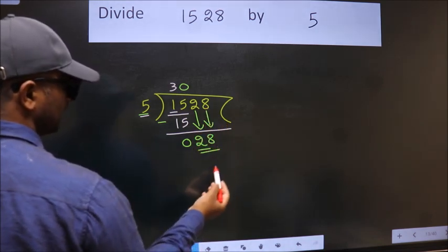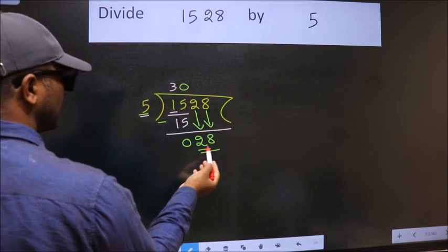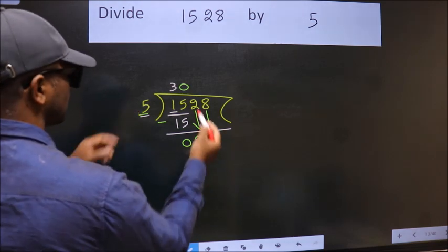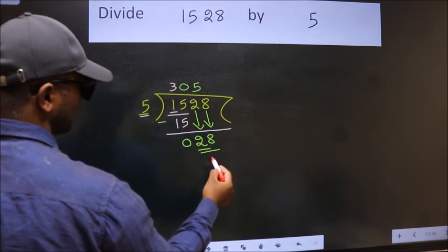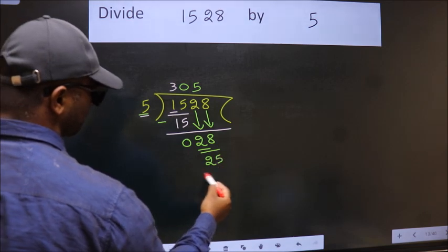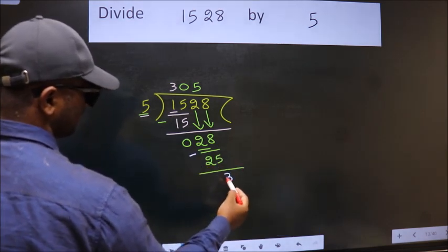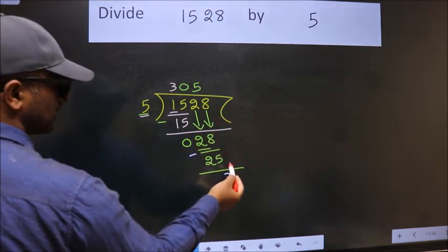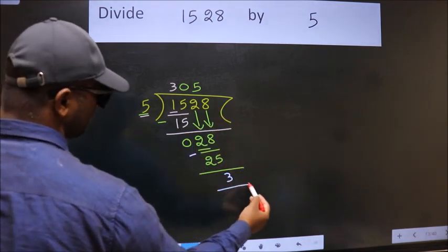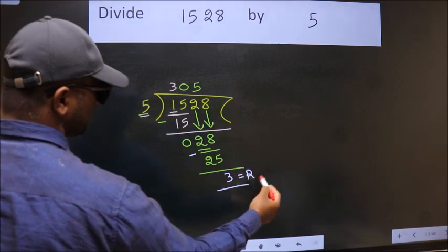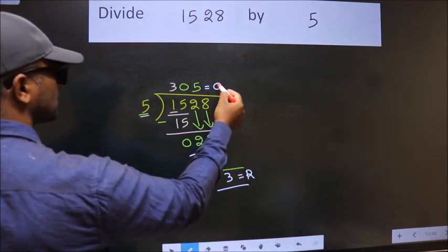So, 28. A number close to 28 in the 5 table is 5 times 5, which is 25. Now we subtract and get 3. No more numbers to bring down, so we stop here. This is our remainder and this is our quotient.